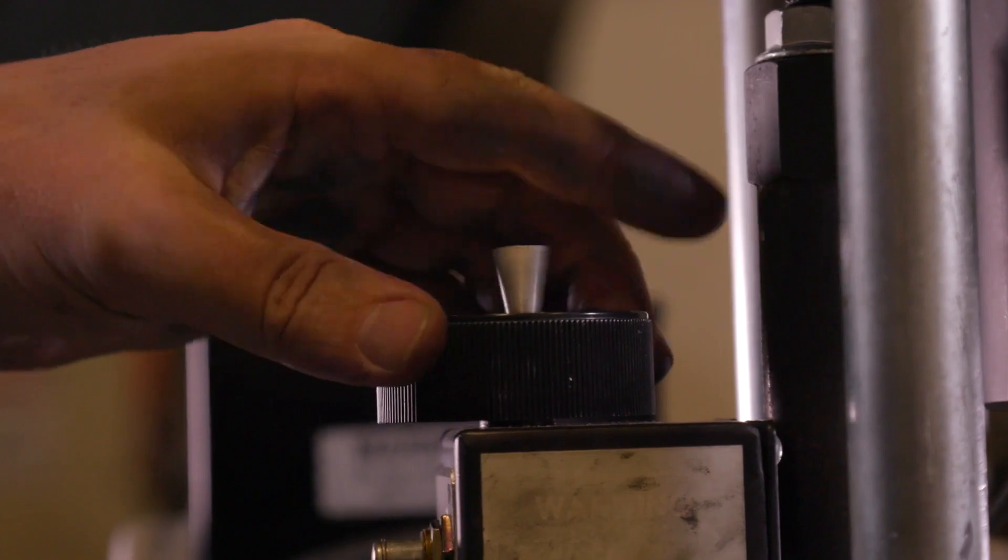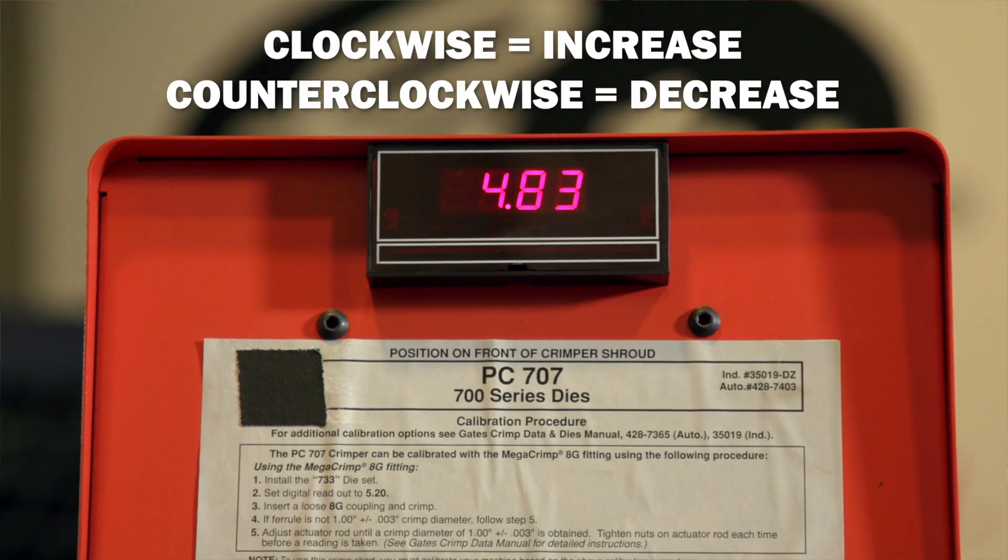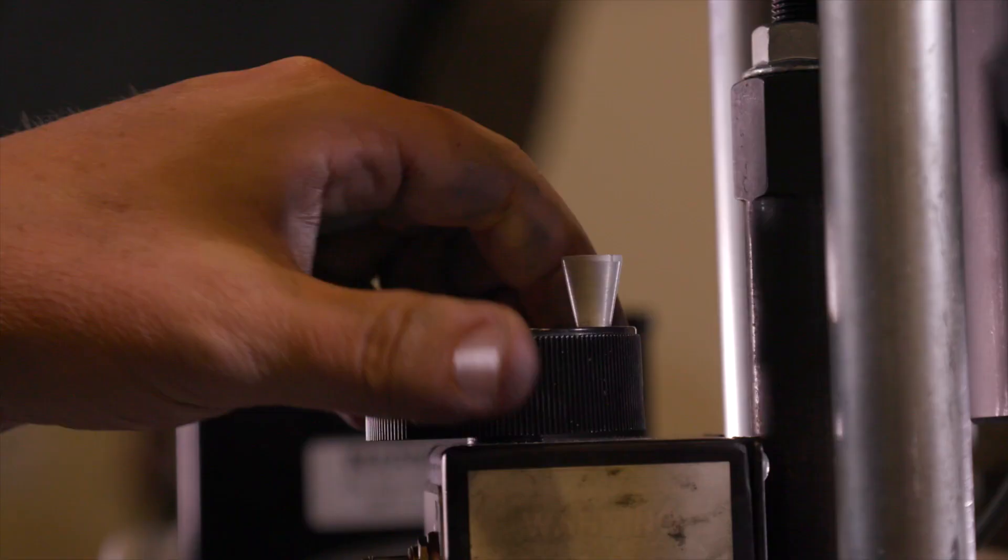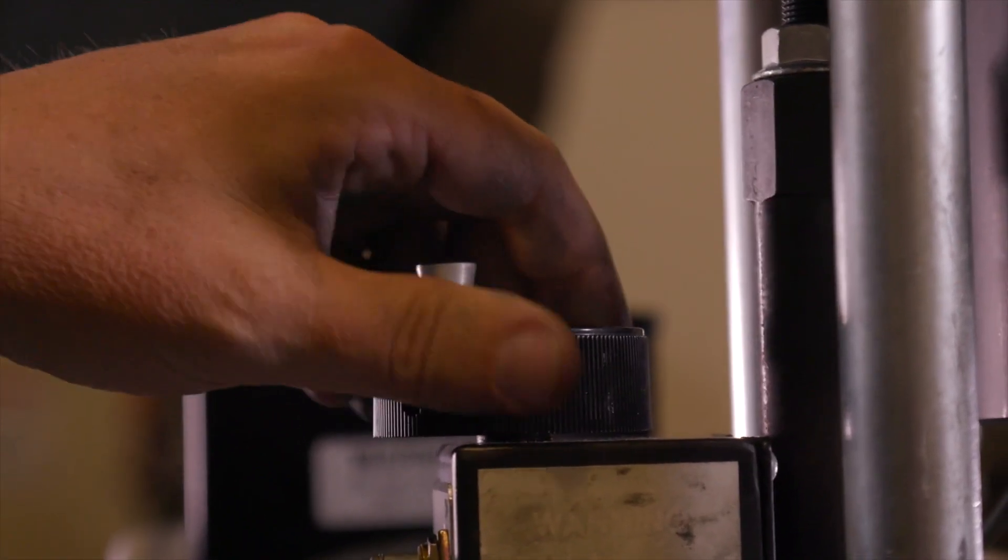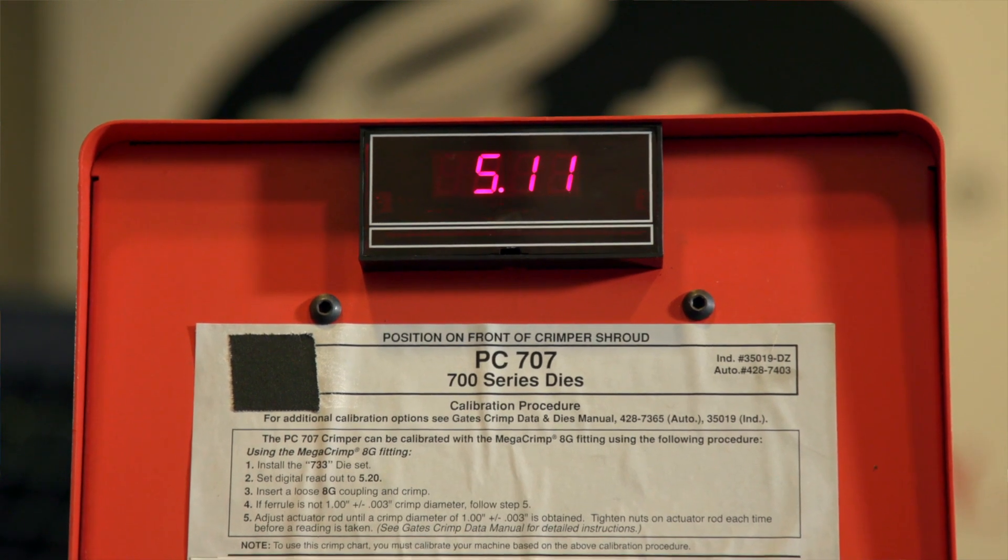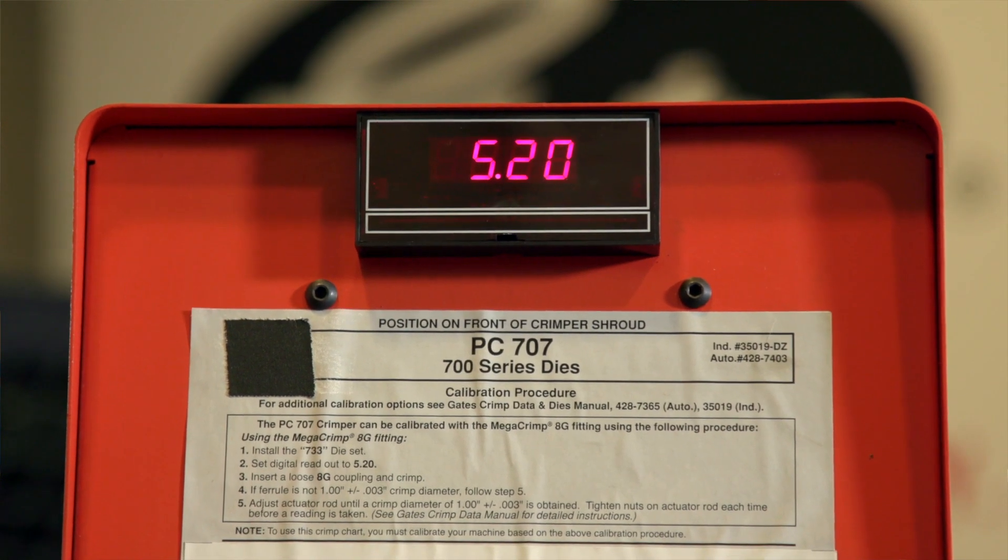Note that rotating the knob clockwise will increase the number while rotating the knob counterclockwise will decrease the number. The readout figures may jump a number like 5.20 to 5.19 or 5.21. This will not affect the crimp outside diameter.